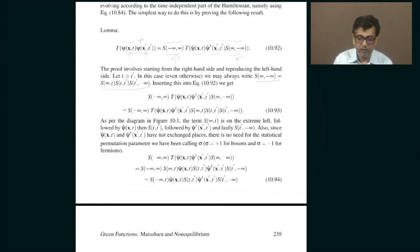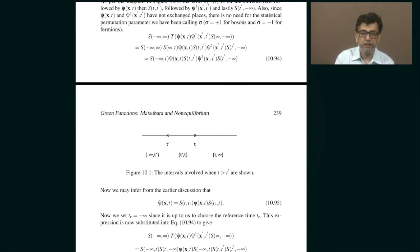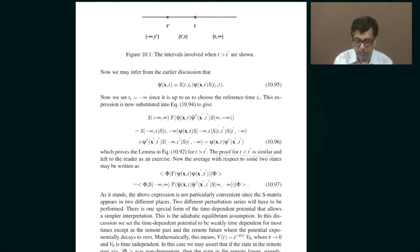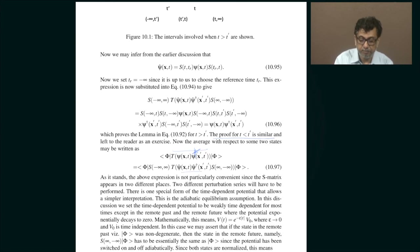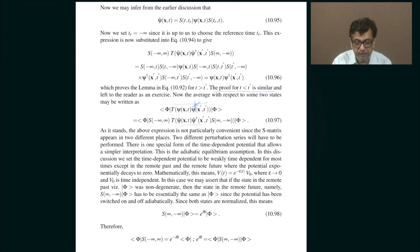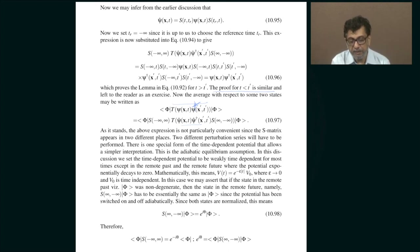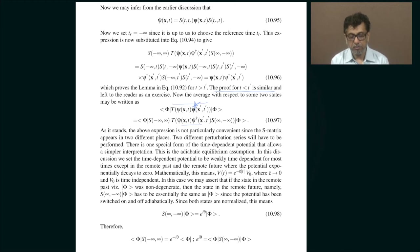Assuming that you have understood that, the expectation value of the time-ordered product of these two operators — again, that is a misprint: it should be psi-dagger there — with respect to some state is clearly given by the expectation value of the same operators evolving according to the unperturbed Hamiltonian, sandwiched between these two S-matrices. Still not very convenient — there are still two S-matrices — and my goal of having the S-matrix on only one side has not yet been reached.